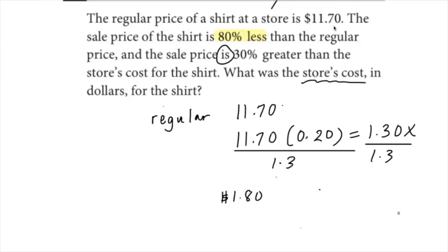It does, because look up here. If we're talking about the sale price of the shirt is 80% less than the regular price, then it makes sense. It makes sense, logically, that we'd get all the way down to $1.80.